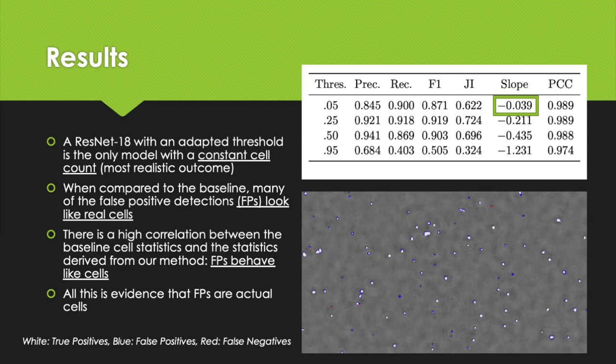In addition, we compared the average cell speeds over time. First derived from the baseline segmentation and second derived from CNN segmentations, the resulting speed curves have a high correlation which shows that the false positive cell detections, apart from looking like cells, also behave like natural cells.